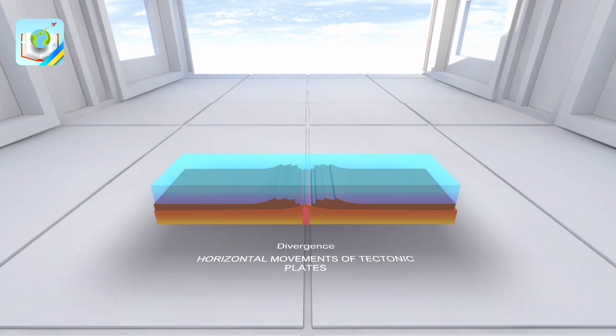In places where lithospheric plates diverge, deep gorges or rifts are formed. Mantle substances pour out of them, and solidifying forms underwater mountains in the oceans. Thus, as a result of the divergence of the South American and African plates, the South Atlantic ridge was formed.